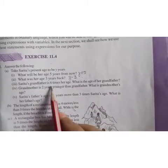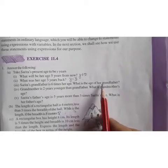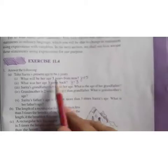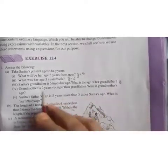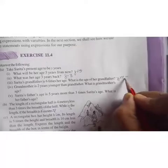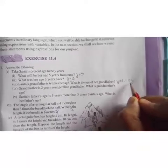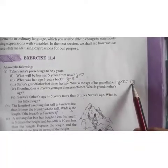Sarita's grandfather is 6 times her age. What is the age of her grandfather? So her age is Y. And Sarita's grandfather is 6 times her age, that is into 6. So it becomes 6Y. So her grandfather's age is 6Y years.